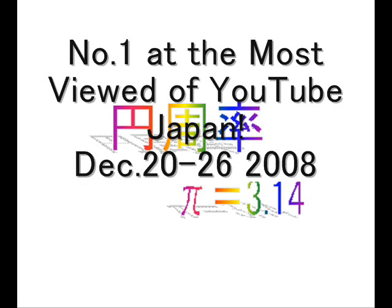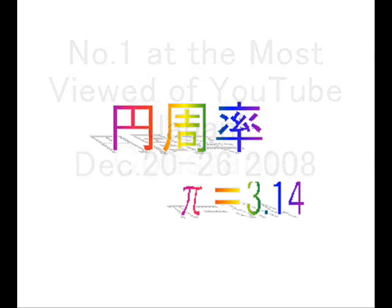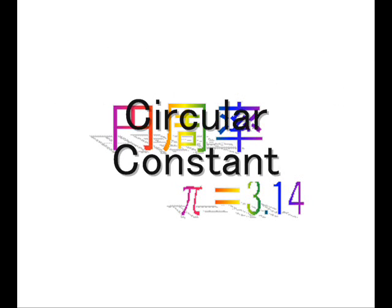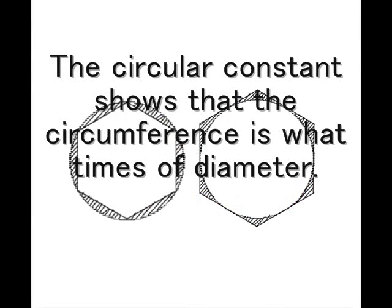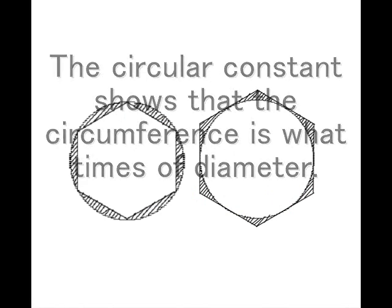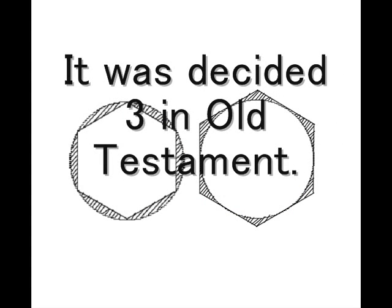Number 1 at the most viewed of YouTube Japan: Circular Constant. The circular constant shows that the circumference is pi times the diameter. It was decided to be 3 in the Old Testament.